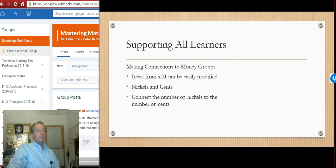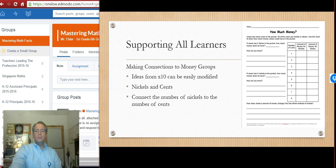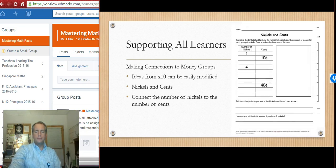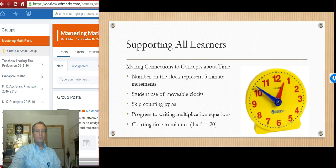Connecting again with our, with any struggling kids, making connection to the money groups. All those ideas that we shared in the multiply by 10 can easily be modified to multiply by five. Nickels and cents, connecting the number of nickels to the number of cents. So we've got some sheets that might look like this. It looks very similar to when we had our dimes to dollars. Now we're talking about nickels and dimes and how those two connect. And then the number of nickels and how many cents does that make? And how do you know? Can you draw it out? And so again, these are both in the digital downloads for you.